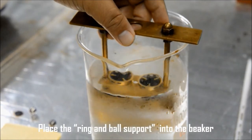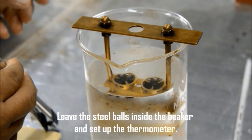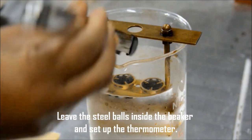Place the ring and ball support into the beaker. Leave the steel balls inside the beaker and set up the thermometer.